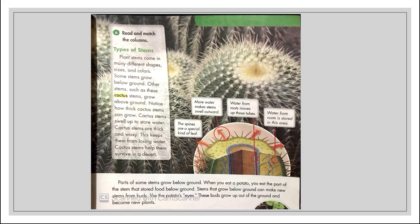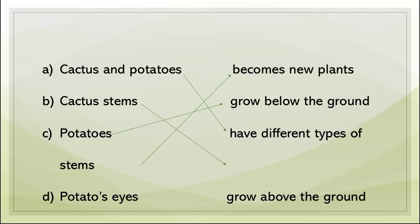Parts of some stems grow below ground. When you eat a potato, you are eating the part of the stem that stored food below ground. Stems that grow below ground can make new stems from buds, like potato eyes. A potato eye is a bud which grows inside the ground, and you can use it to grow another potato — just as a pumpkin stem can grow a new plant. These buds grow up out of the ground and become new plants.